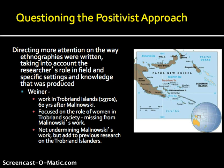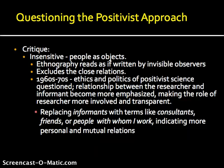Other critiques of the positivist approach are that it was insensitive and treated people as objects, with ethnography written as if by invisible observers. It excludes the close personal relations that many anthropologists built over time with the people they were working with. This was part of a larger shift in the politics and ethics of research throughout the 1960s and 70s, where the relationship between the researcher and the informant became more emphasized. This led to replacing terms like 'informants' with 'consultants,' 'friends,' or 'people with whom I work.'